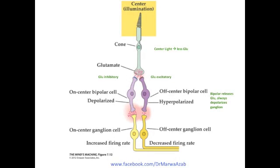In this short video, we're going to talk about retinal cells, beginning with the photoreceptors. The example of the photoreceptor we have in the picture is cones, which are sensitive to details and color.